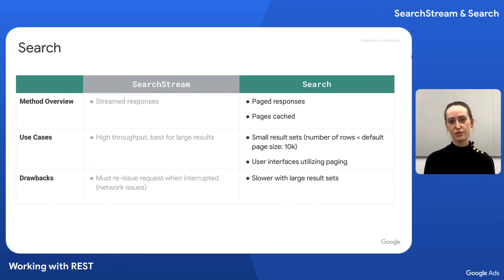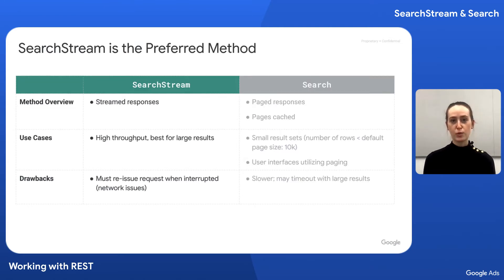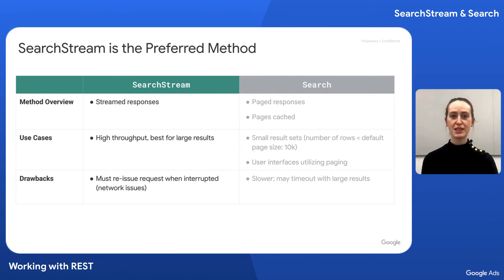Search is ideal for smaller data sets or unreliable networks and for user-facing applications that utilize paging. The drawback is that it tends to be slower than streaming, especially for large reports. In general, we recommend searchstream over search, as it tends to be more performant. For result sets with fewer than 10,000 rows, there's no significant difference in performance. For multi-page result sets with more than 10,000 rows, searchstream is typically faster since multiple round trips are avoided and less time is spent reading or writing the disk cache.